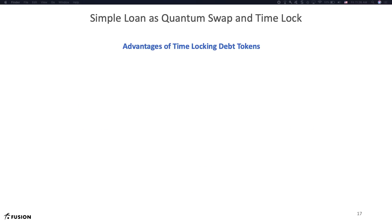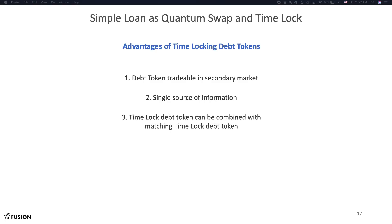What are the advantages of this approach? As before, the debt token is tradable in a secondary market. The people who buy this token now know exactly when cash will be repaid without having to reference other smart contracts. More importantly, the time-locked debt token can be combined with other identical time-locked debt tokens, and the payment quantum swap can be paid out with any non-time-locked debt token. This combination has tremendous positive implications for the creation of more advanced financial instruments, which we will explore in subsequent sessions.